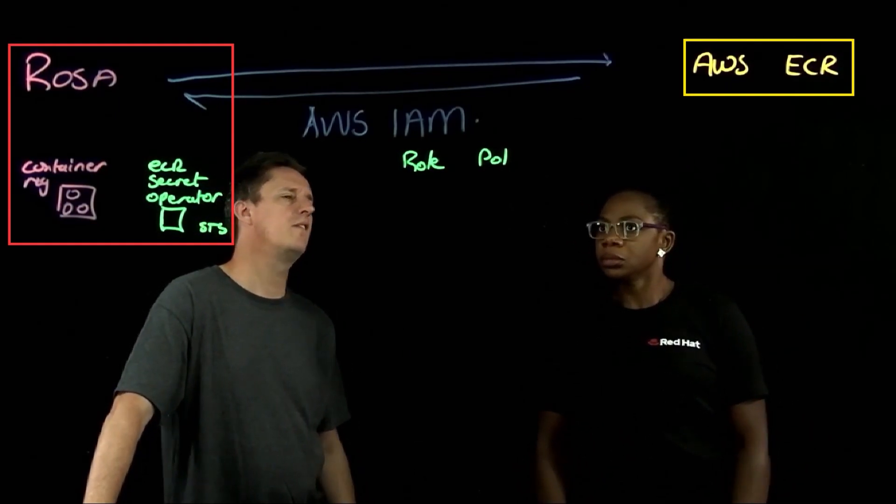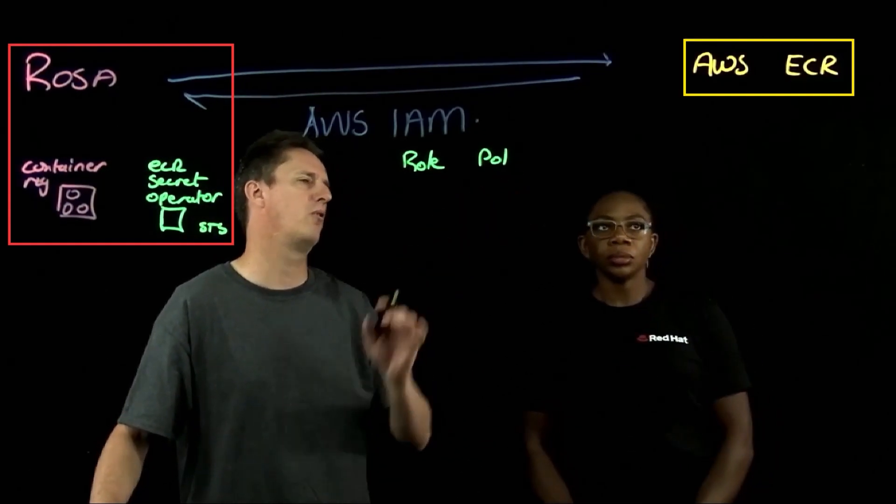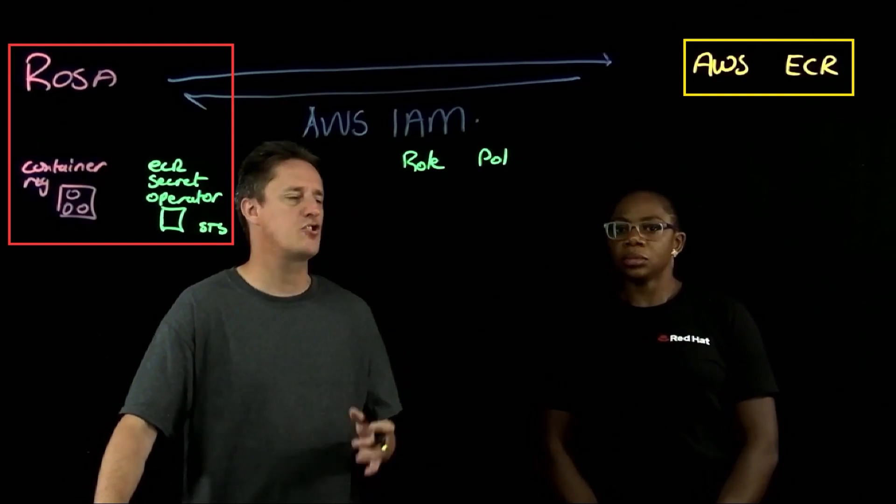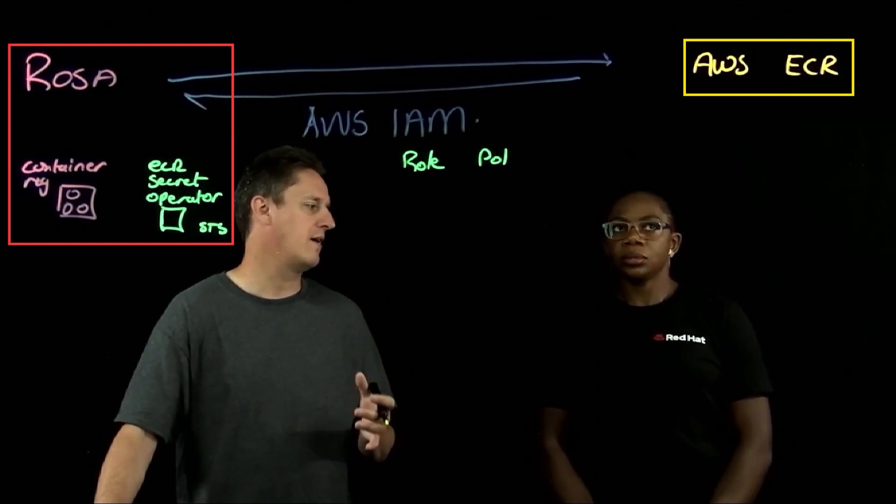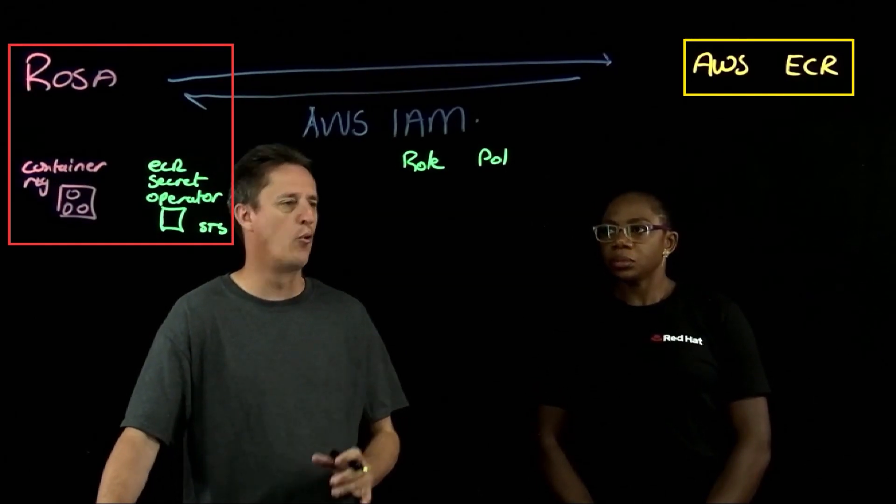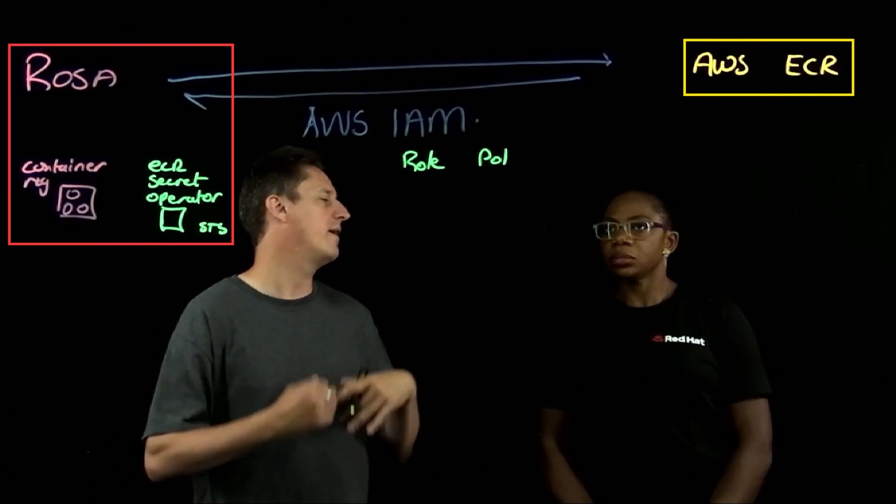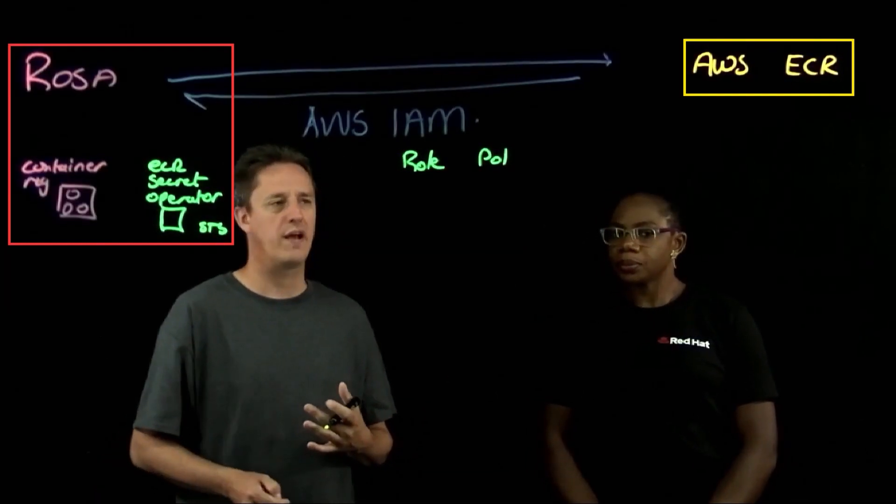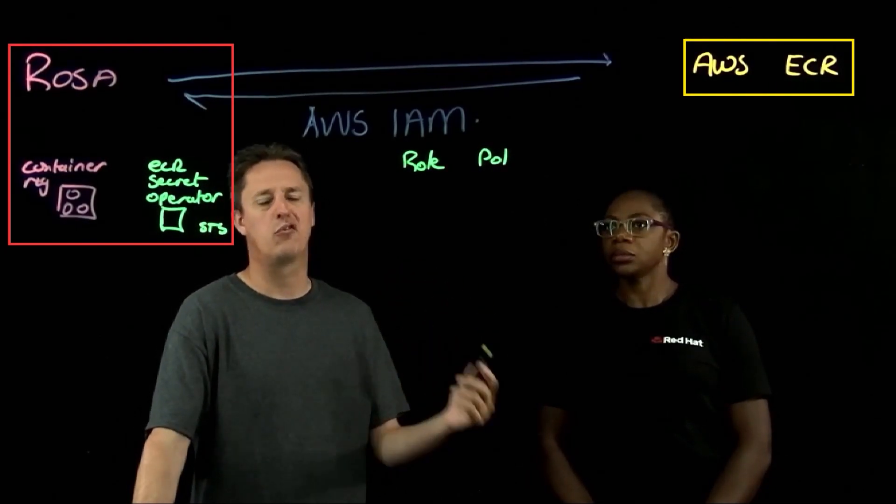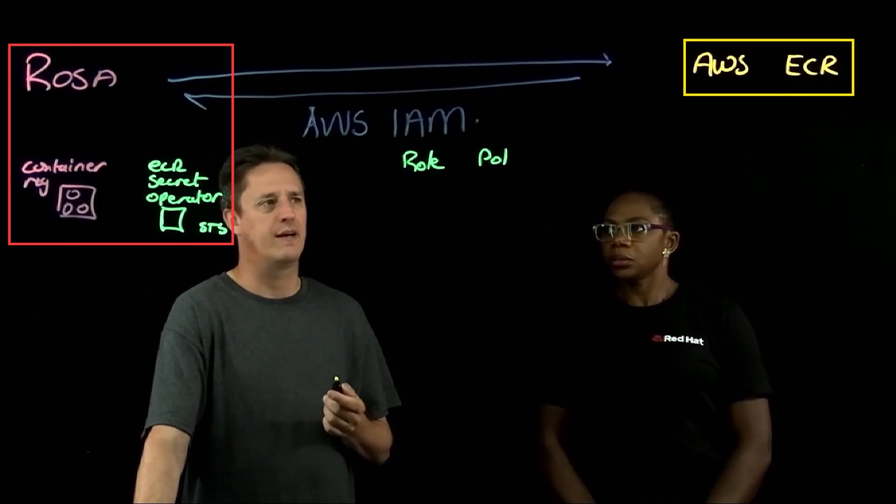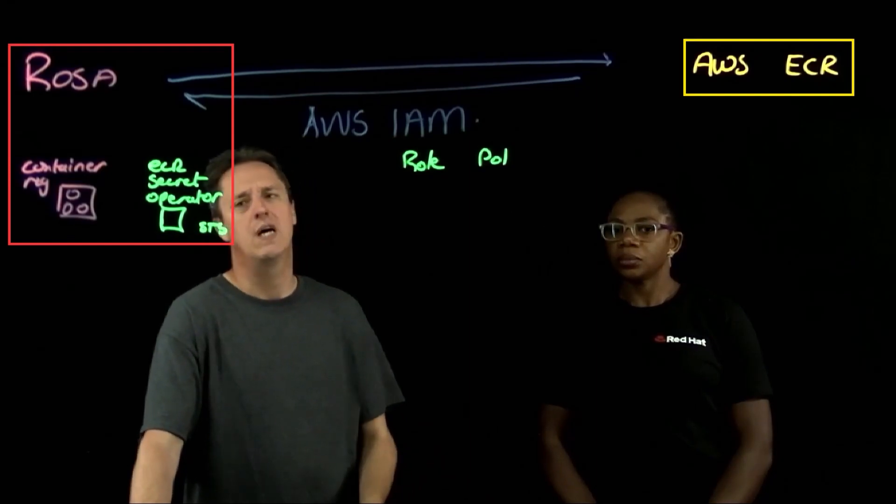So there's a couple of things I see as a benefit here. Firstly, you have a container repository, and you mentioned it's managed. What we mean by that is it will scale dynamically. You're not managing storage to store all of those container images. It's a managed service from a reliability standpoint as well that AWS worries about is that service always available. You can set up replicas, you can set up inter-region interactions.